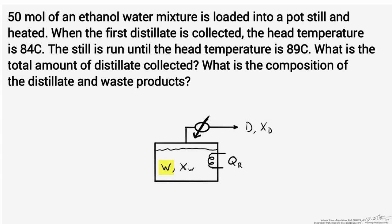In these calculations, capital W is going to indicate the total number of moles of waste in the pot still, or the liquid that is in the pot still at any given time. X sub W is the instantaneous composition of that liquid in the still. D is the amount of distillate that's produced, and X sub D is the composition of the distillate — and X sub D, for the case of these calculations, is an instantaneous composition.